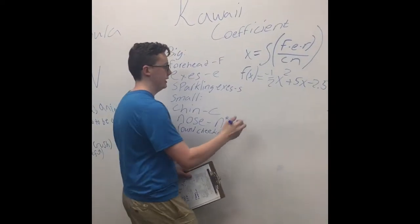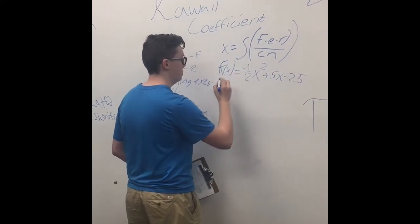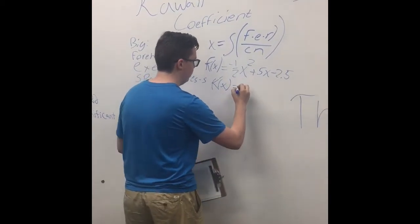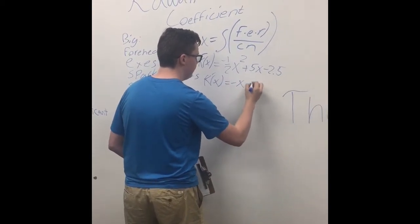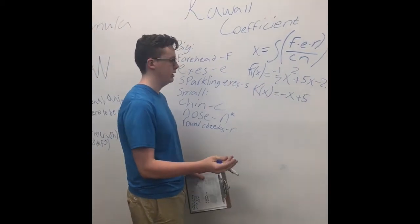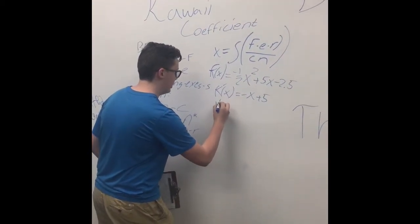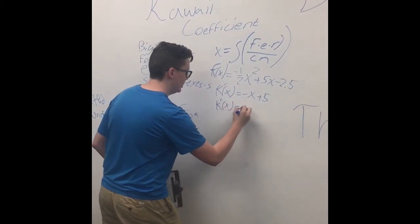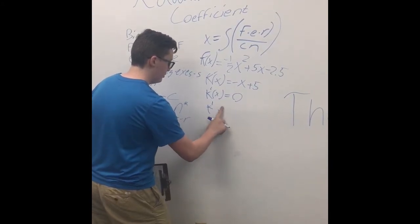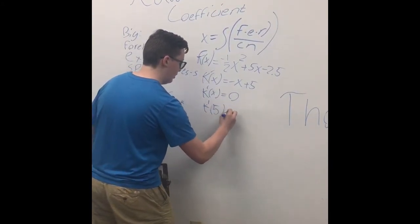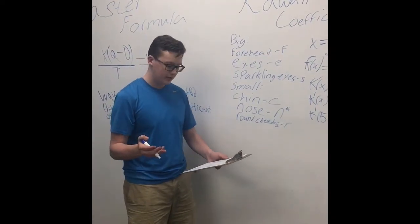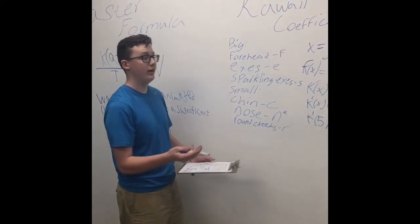Now, once you derivatize this, it's k prime of x equals negative x plus 5. And now optimization is where you need to find the utmost point on this, and that would be when k prime of x equals zero. That value is 5. So that means the ratio for the kawaii coefficient would equal 5 to produce the correct kawaii coefficient of 10.